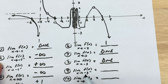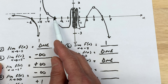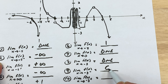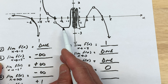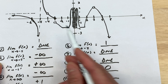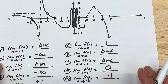For number nine: the limit as x approaches negative 3 from the left. Approaching from the left, you're getting closer to a y value of 0. And for number ten, the limit as x approaches negative 3 from the right — you're getting closer to a y value of negative 1. That's why the overall limit didn't exist for number 8: the two one-sided limits were approaching different y values.